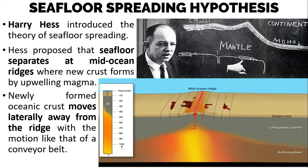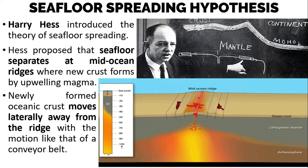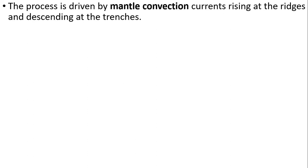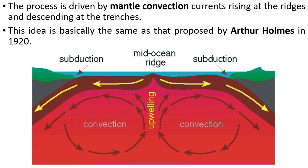Old oceanic crusts are dragged down at the trenches and reincorporated back into the mantle, forming new crust. This process is driven by mantle convection currents that rise at the ridges and descend at the trenches. This idea is basically the same as that proposed by Arthur Holmes in 1920.